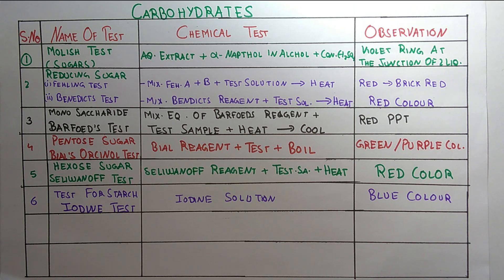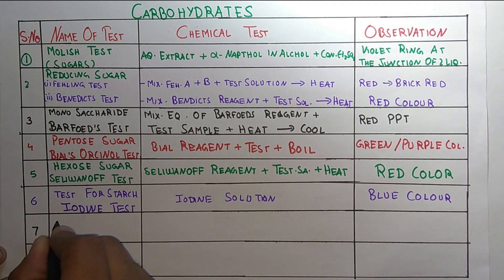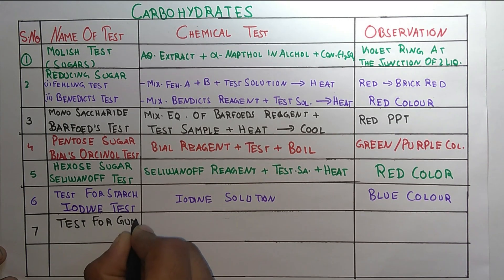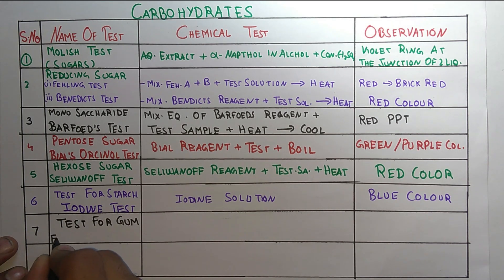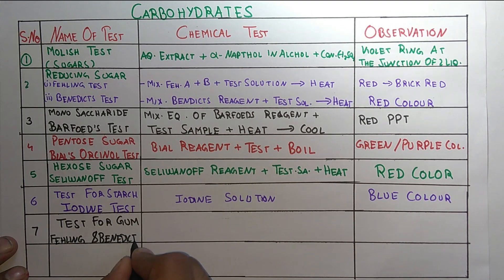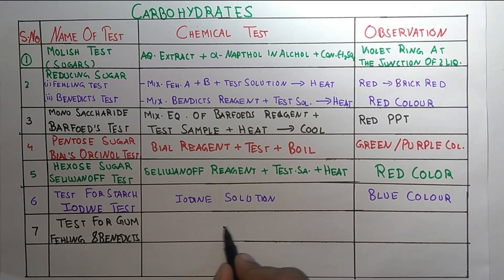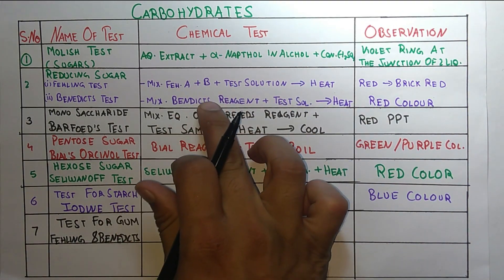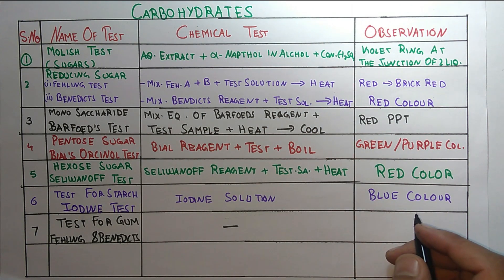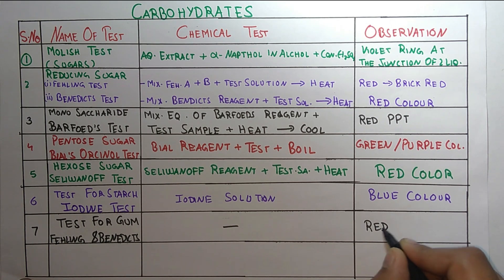The next test is for gum. There are two tests used: Fehling's test and Benedict's test, as already discussed above. The procedures are the same as described previously, and the color produced is red.